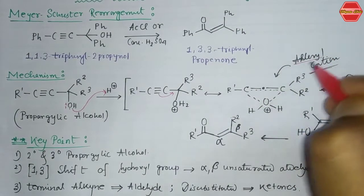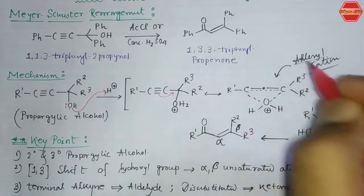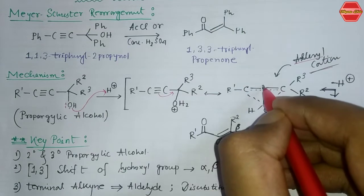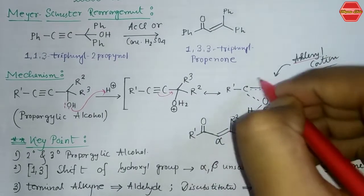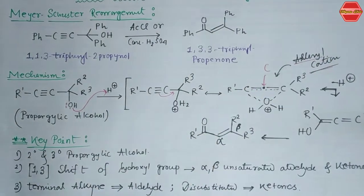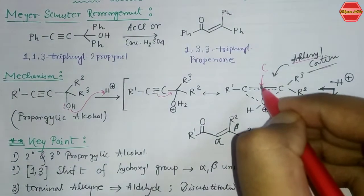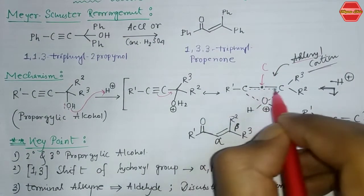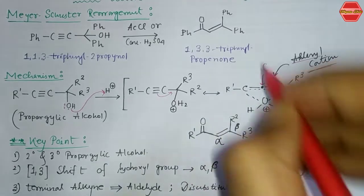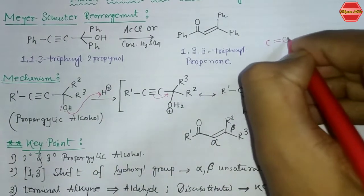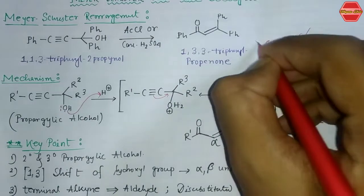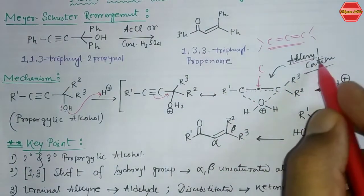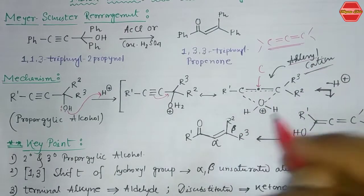This allenyl cation indicates an allene-type system. If you see carefully, there is a C=C=C moiety — this kind of system is basically called an allene system. So if you have this kind of system it is called an allenyl cation.